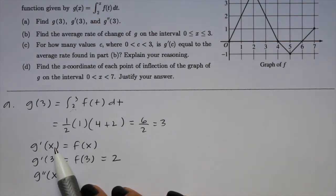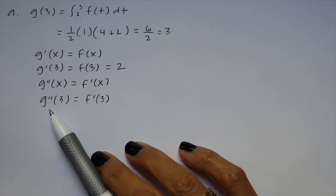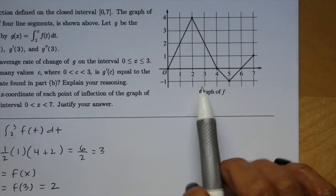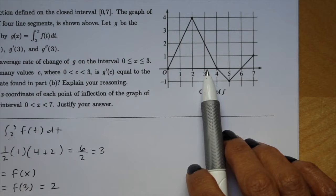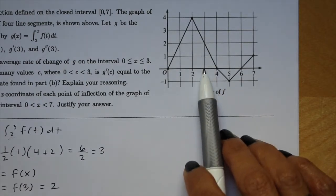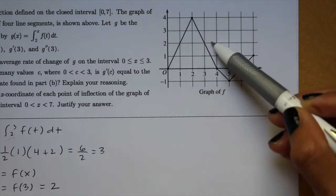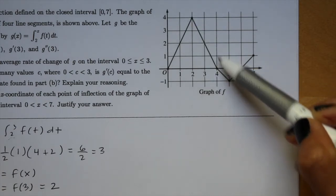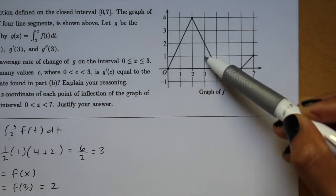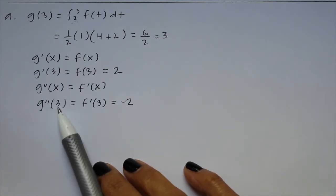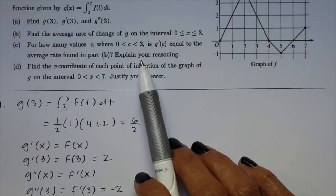Since g prime of x equals f of x, g double prime of x is going to be f prime of x. So g double prime of 3 equals f prime of 3. According to the graph, f prime of 3 is the slope of the tangent line when x equals 3. Looking at that part of the graph, the slope of the tangent line is negative 2. So g double prime of 3 equals negative 2.